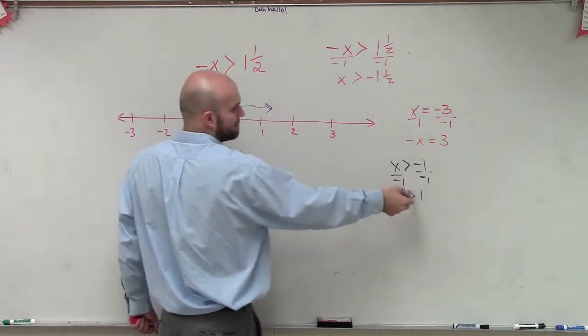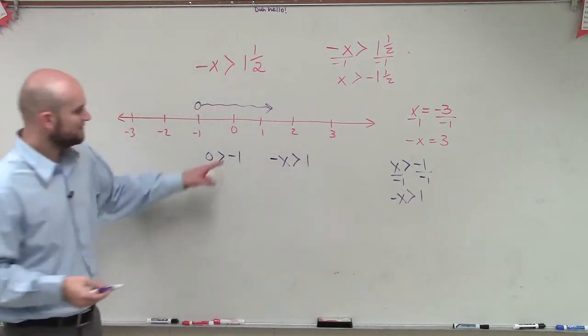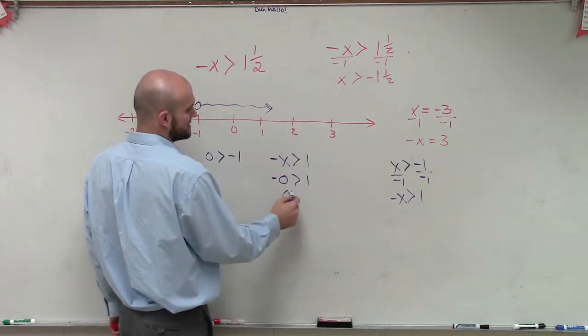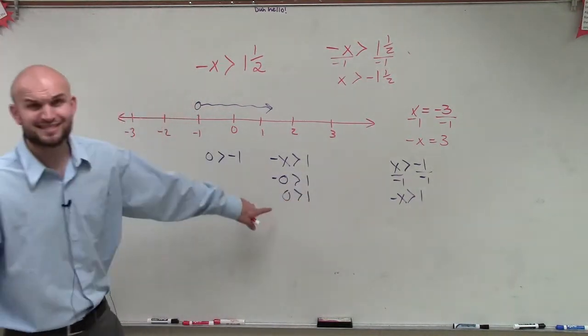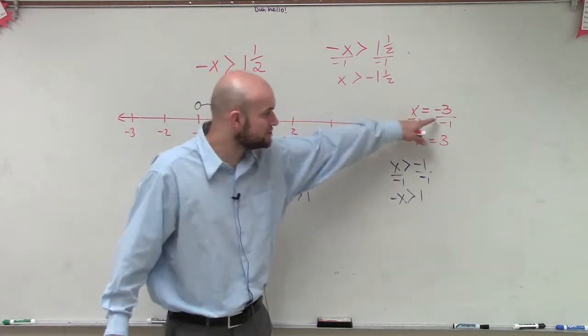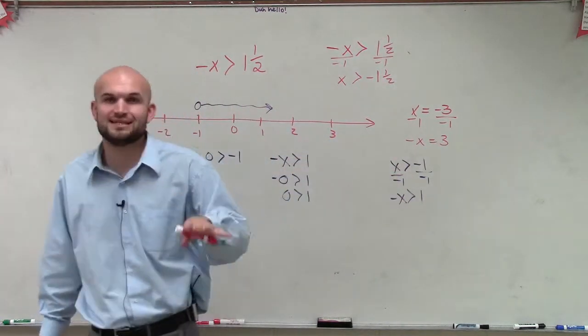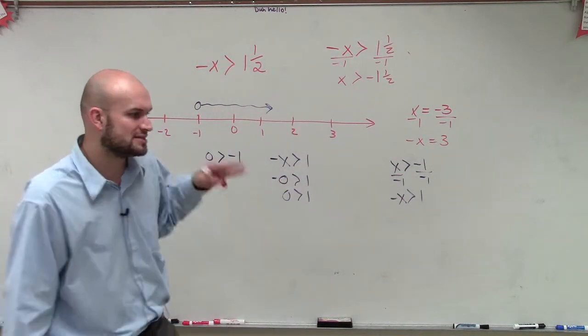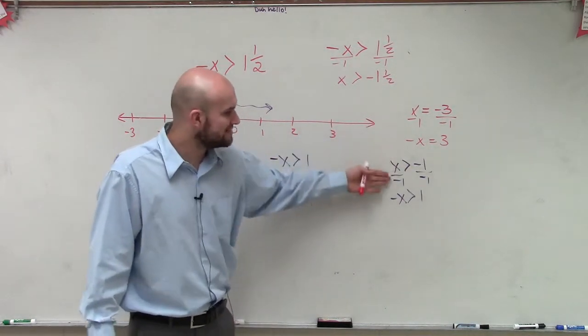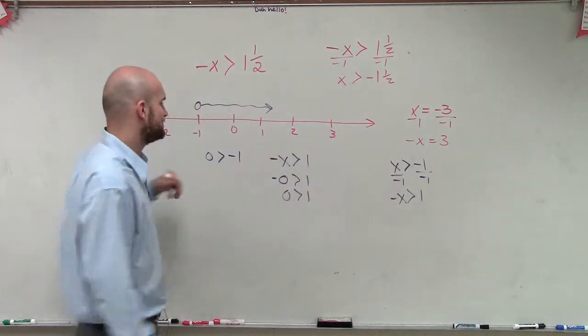But if now I rewrote this and said negative x is now greater than 1, what if I put 0 in for this? Negative 0 greater than 1, 0 is greater than 1. Is that still true? No. But all I did was I did the same operation. For equations it's true, but for inequalities we can't apply the same operation with division and multiplication of a negative number.